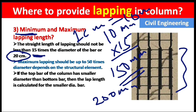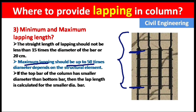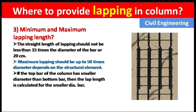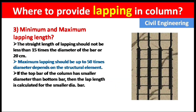The maximum lapping should be up to 50 times the diameter, depending on the structural element. This is for both economical and safe design. So if 10 mm steel is used, multiply by 50 to get 500 mm as the maximum lapping length.